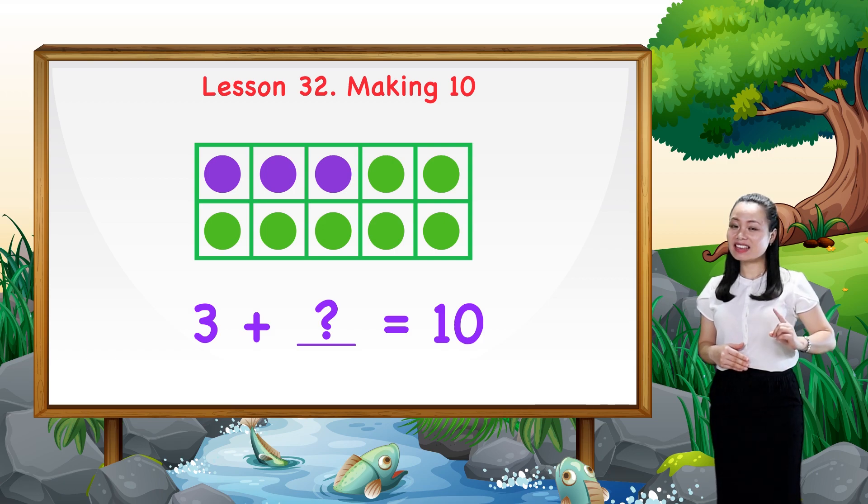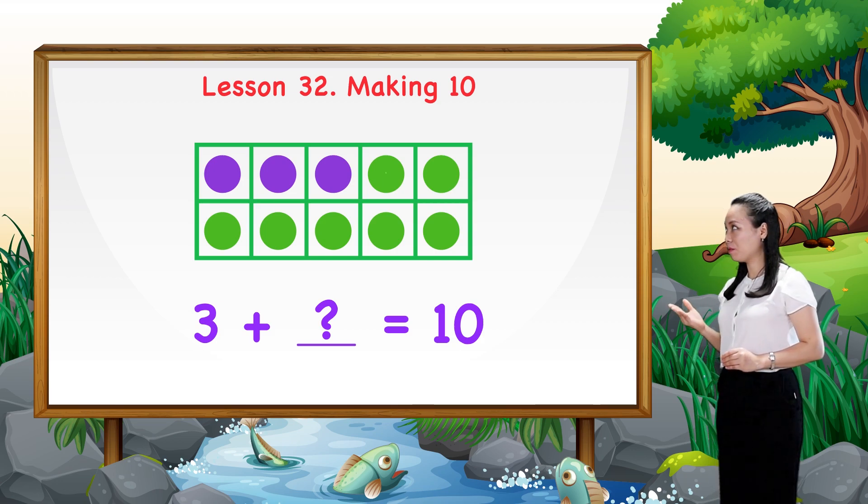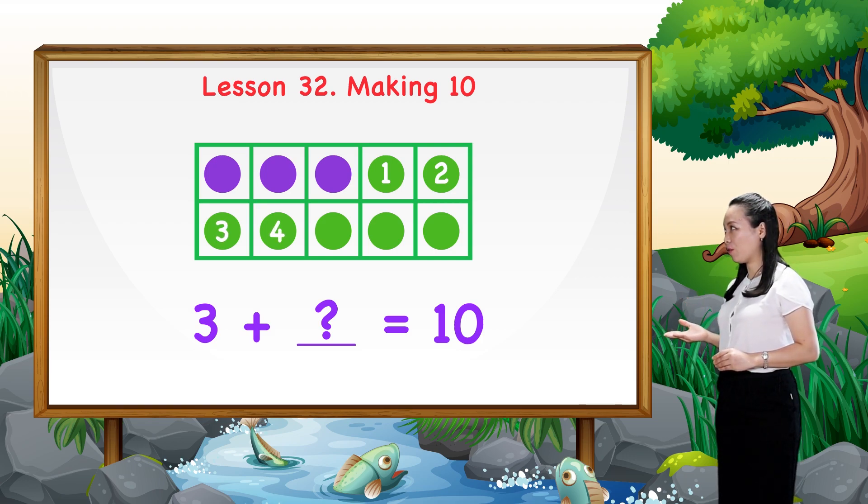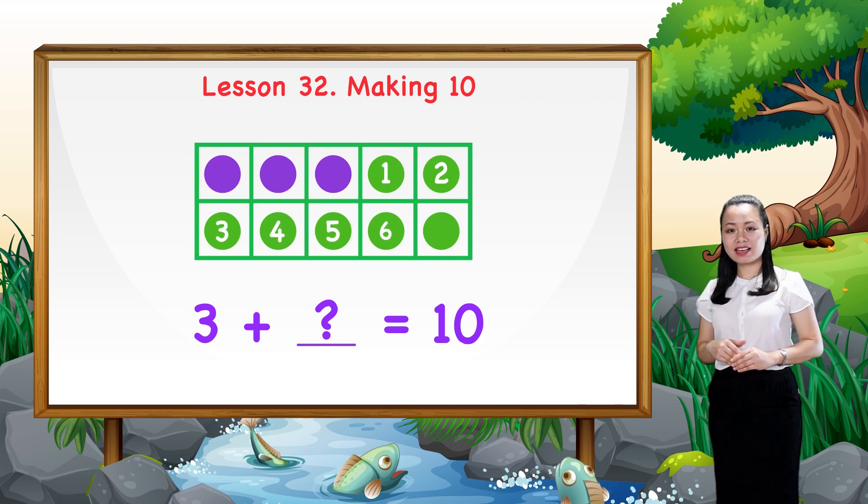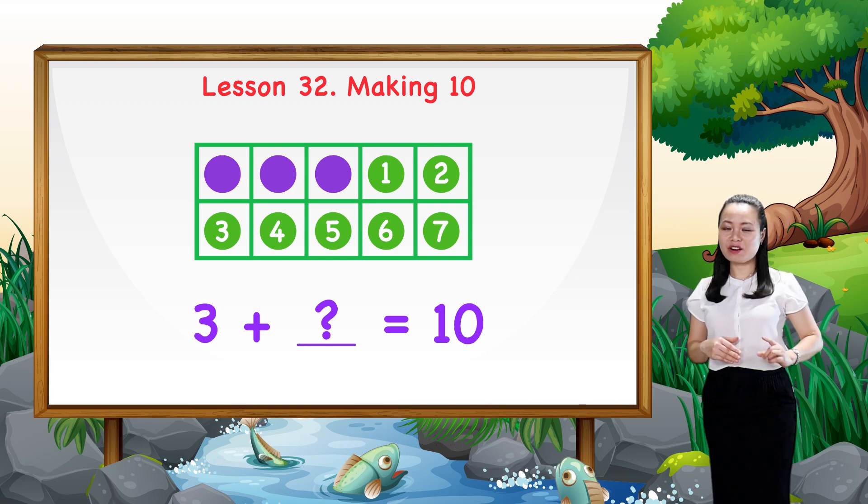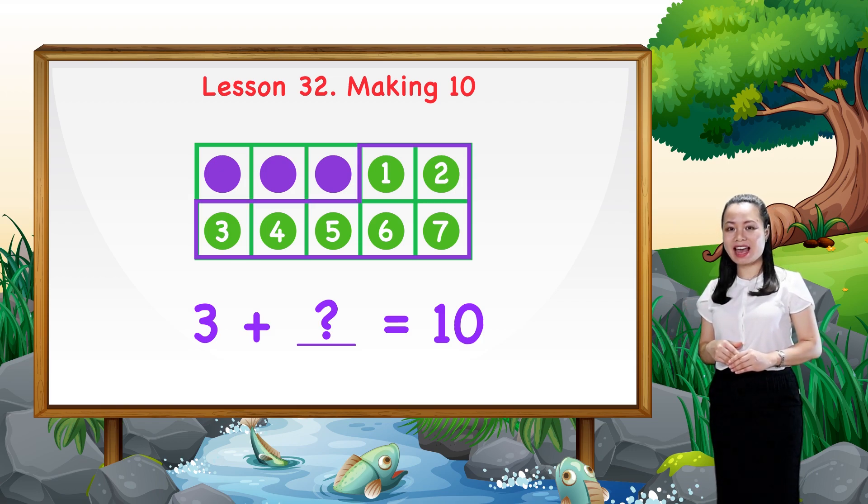Then, count the number of more dots we've just drawn. These dots are needed to make ten. Let's count. One, two, three, four, five, six, seven. So, seven more dots are needed to make ten.